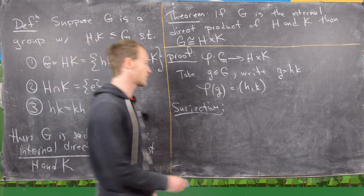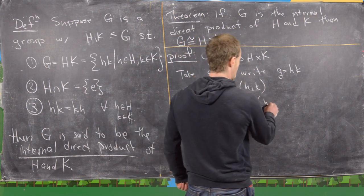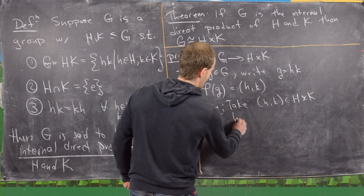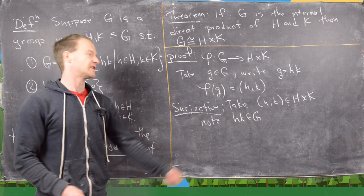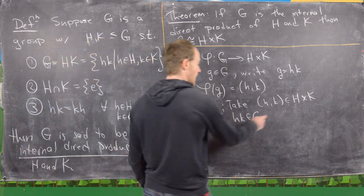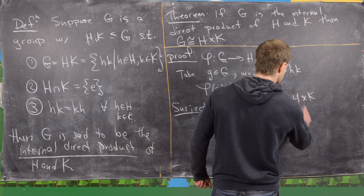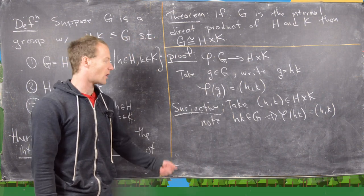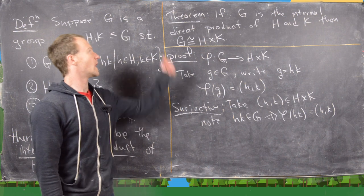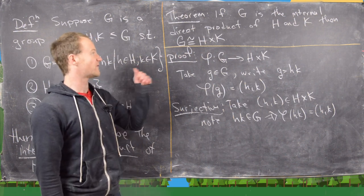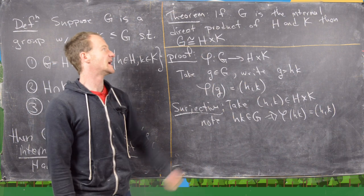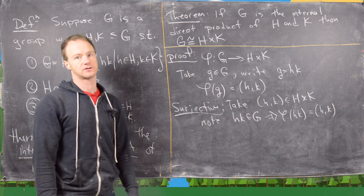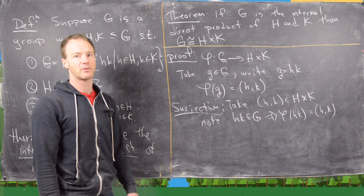To prove surjectivity: take any (h, k) in H cross K. Then h times k is an element of G, given that H and K are subgroups. And if we apply phi to this element h times k, we get (h, k). So we've found a pre-image for every element, showing phi is surjective. That means we've proven the theorem — we've found an explicit isomorphism between G and the external direct product of H and K, given that G is the internal direct product of H and K.